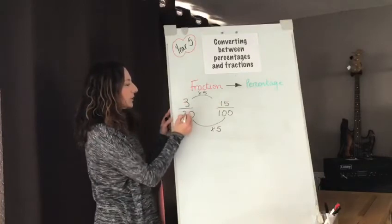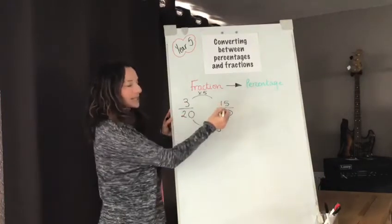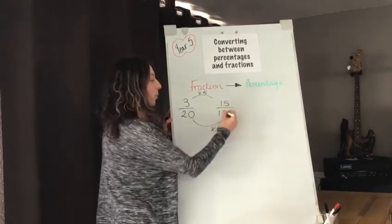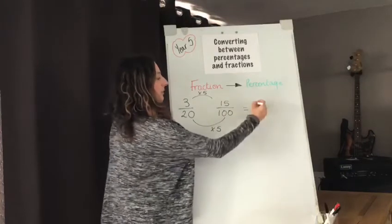So I know that 3/20 is the same as 15 hundredths and once I've got hundredths I've got my percentage. It's 15%.